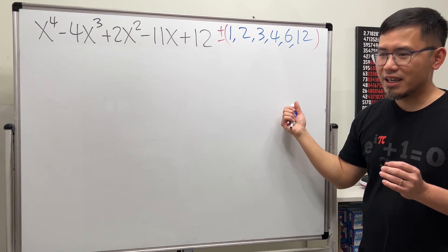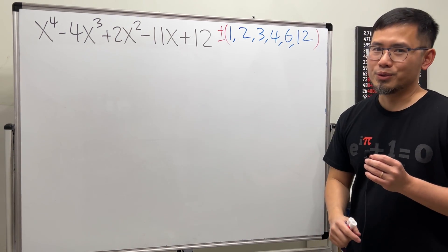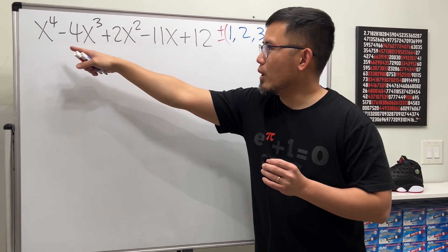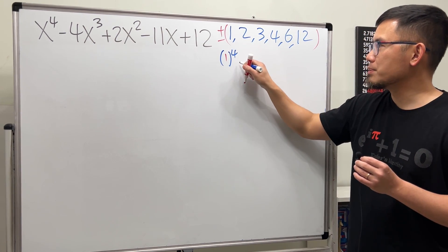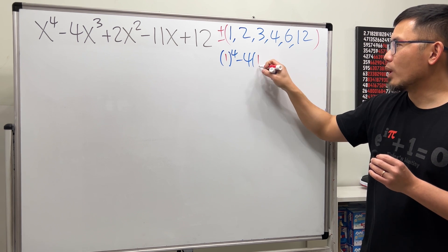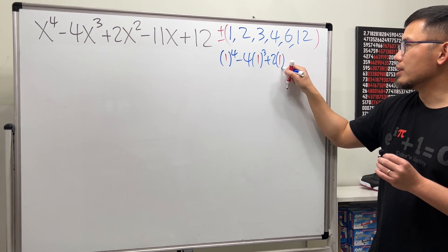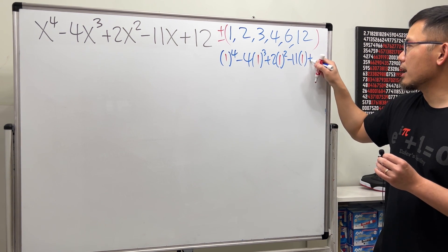Plug it into all the x's and hope that the result is indeed equal to zero. Let's start with 1. If we put 1 into all the x's we will get 1 to the fourth power minus 4 times 1 to the third power plus 2 times 1 to the second power minus 11 times 1 and then plus 12.